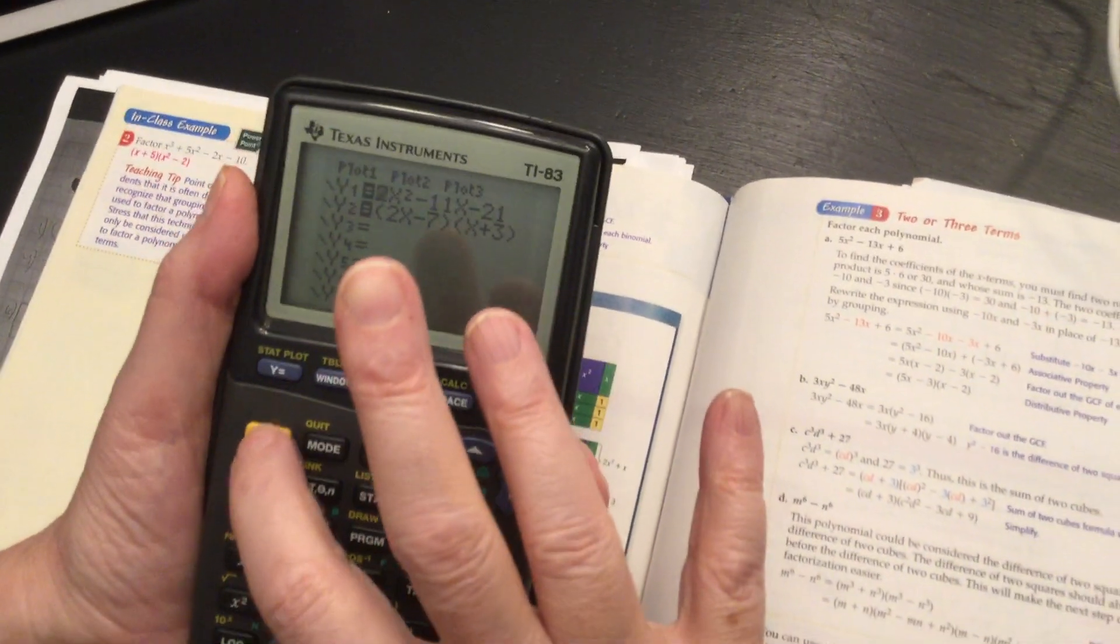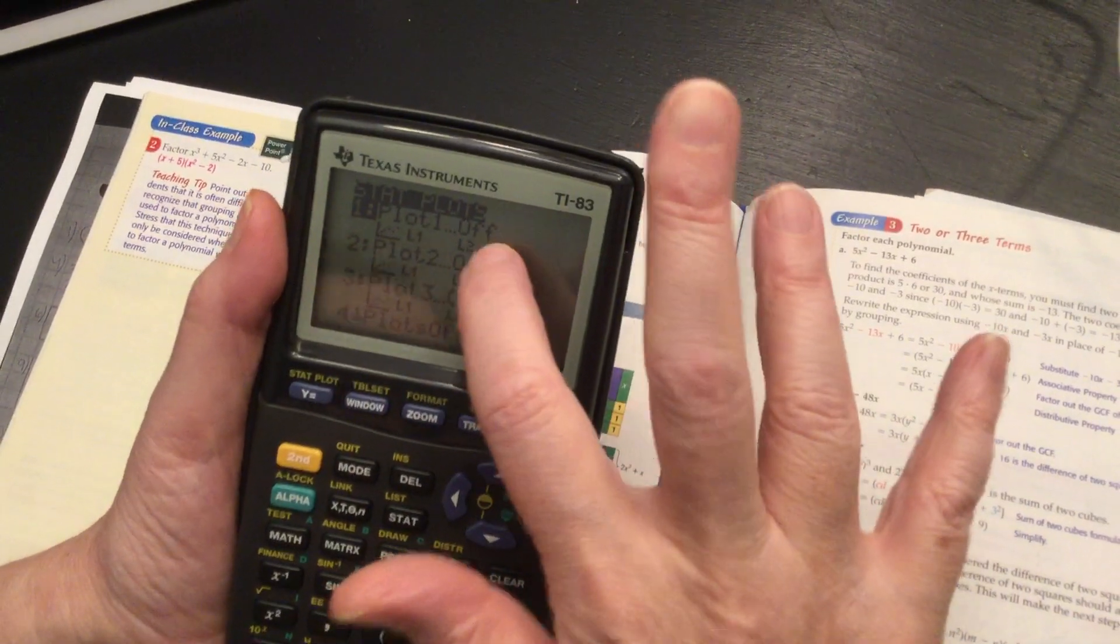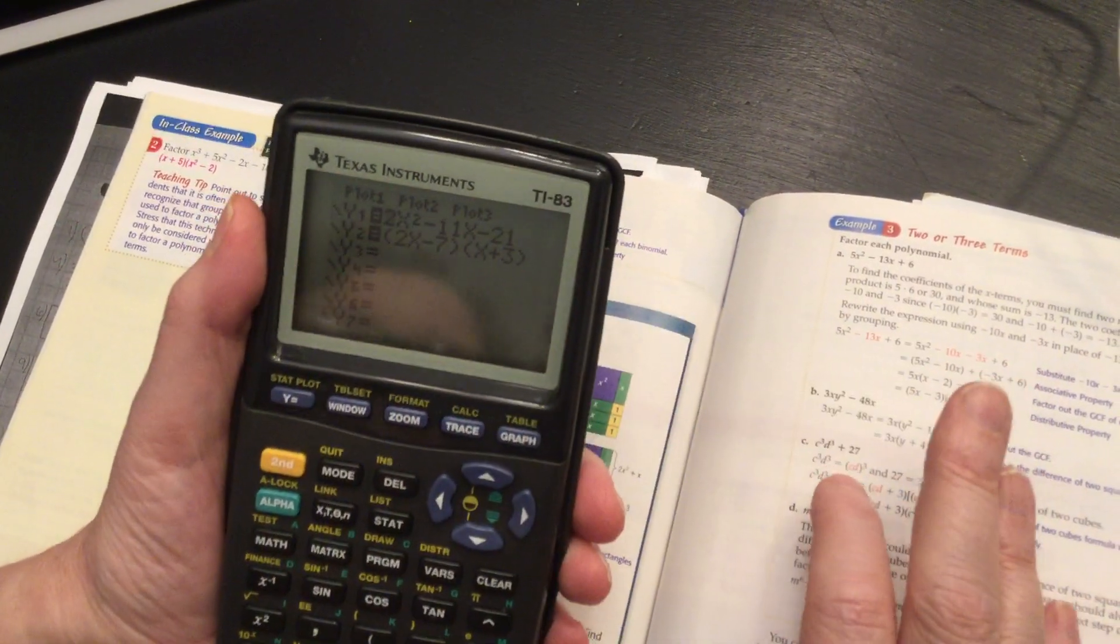Here's a quick tip. Go back into stat plot and make sure these are off or they're going to show up. So you go to y equals.